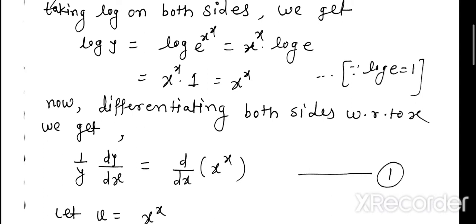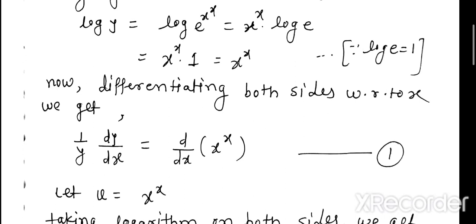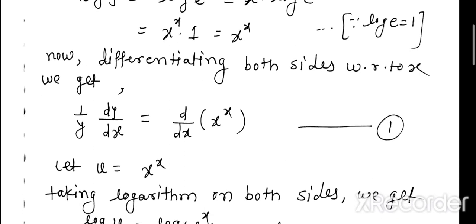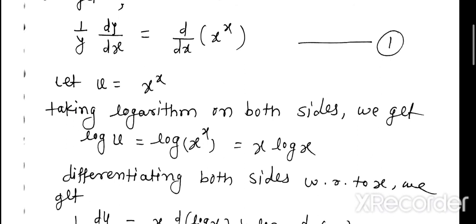Differentiating both sides, 1/y · dy/dx equals derivative of x^x. But the derivative of x^x is not directly known since x is in the power of x. So we must solve it separately. We let u equal x^x and cannot differentiate it directly, so we take logarithm.